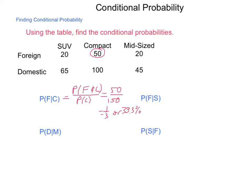So the probability of F given C is 33 and one-third percent — a third of the cars are foreign if we're only looking at compact cars. Next, let's look at the probability of F given S — a foreign car given that it's an SUV. This is P(F and S) / P(S). The probability of F and S is 20, and the probability of S — all SUVs — is 85. So 20 divided by 85 is 4/17ths. Since 4/16ths would be a quarter, 4/17ths is a little smaller, about 23%.